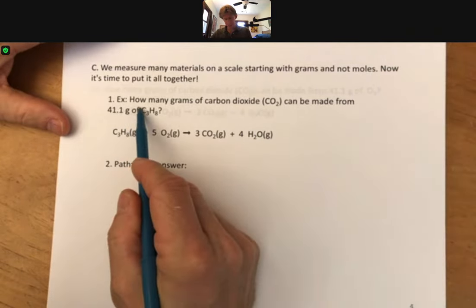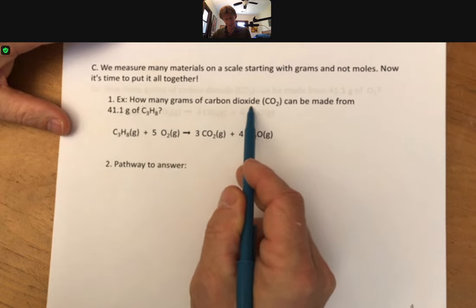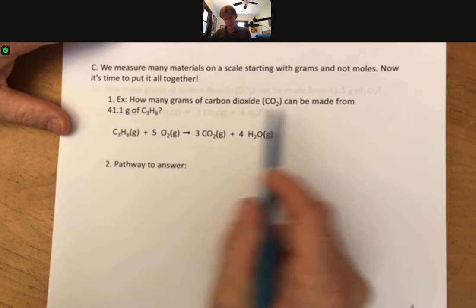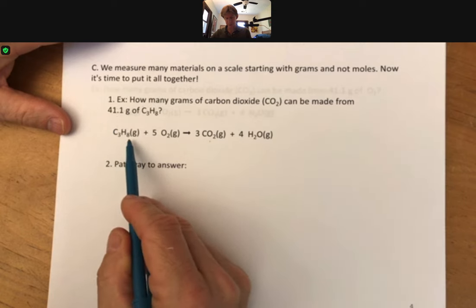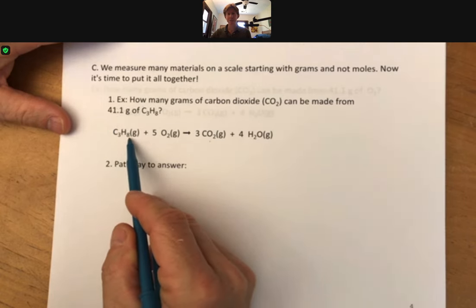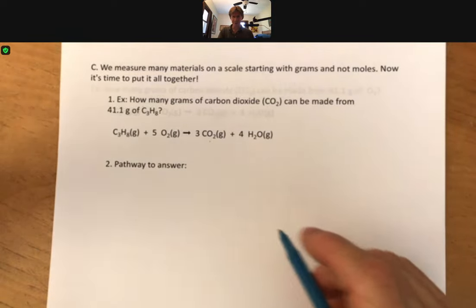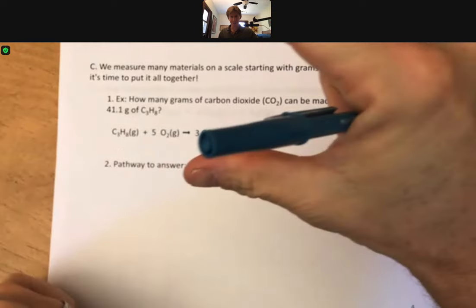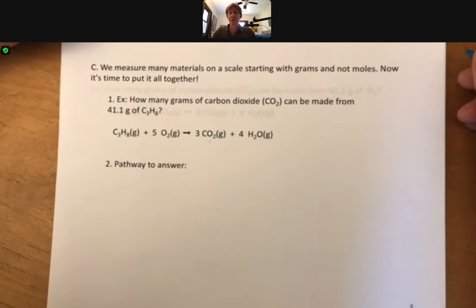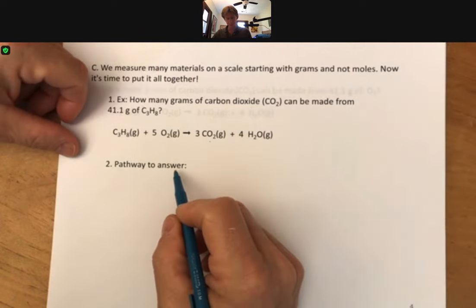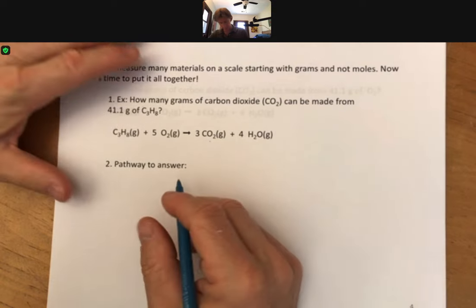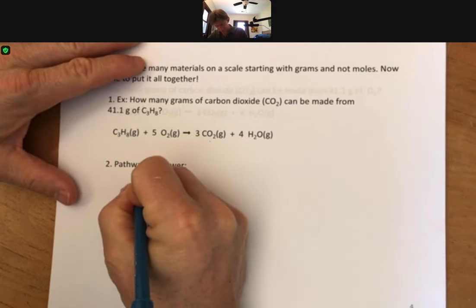In this example we've got how many grams of carbon dioxide can be made from 41.1 grams of C3H8, that's propane, and this is going to be a big one, something we're going to do greater than 50 times throughout the rest of the semester so this is something we want to get down. We'll go over the pathway here. You've been given grams of C3H8.